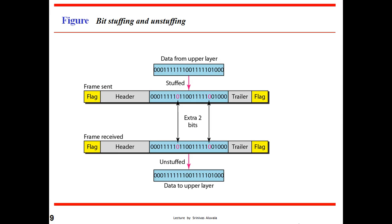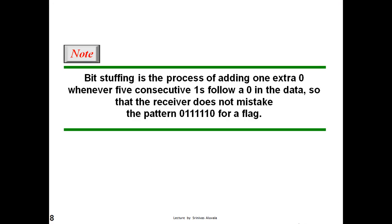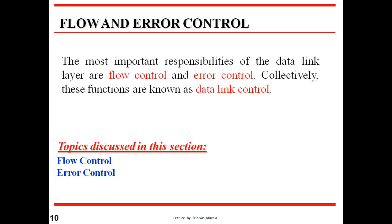Bit stuffing and unstuffing: if a flag is used and the flag pattern appears as part of the data, immediately after five consecutive 1s a 0 is added, so that the receiver will not mistake the pattern for a flag.